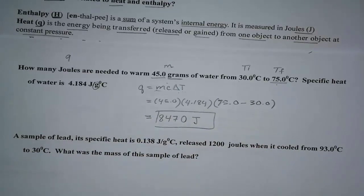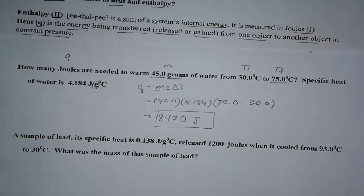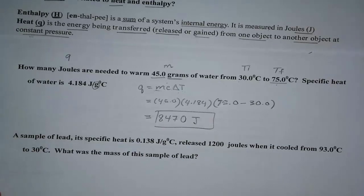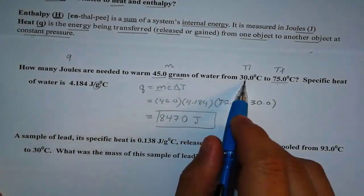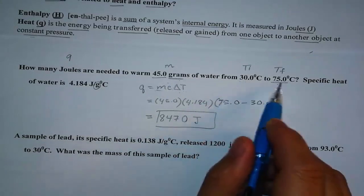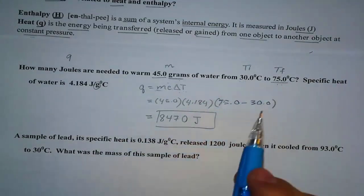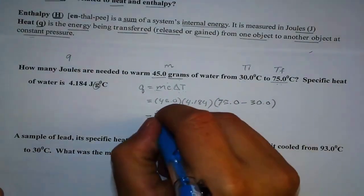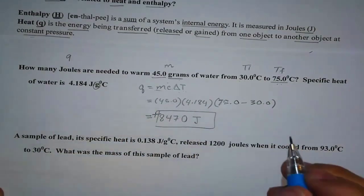Now in this case, what happened to the system? Is it gaining or losing energy? Well, let's look at this water. It is starting from very cold temperature of 30 degrees. And it gets really hot to 75 degrees. So the only way that is possible is gaining energy.